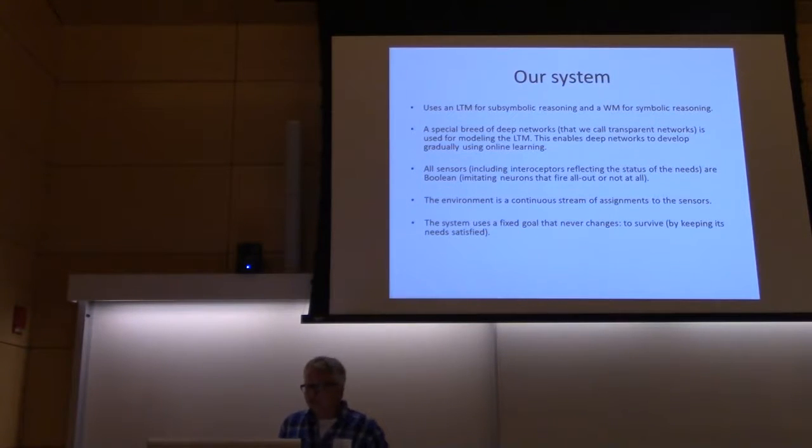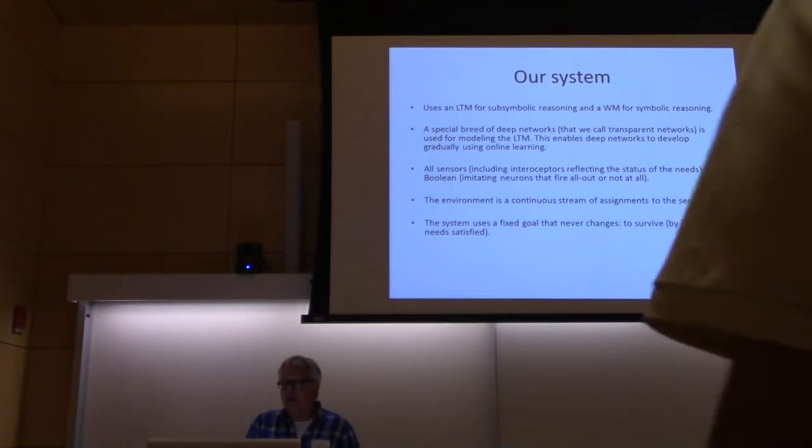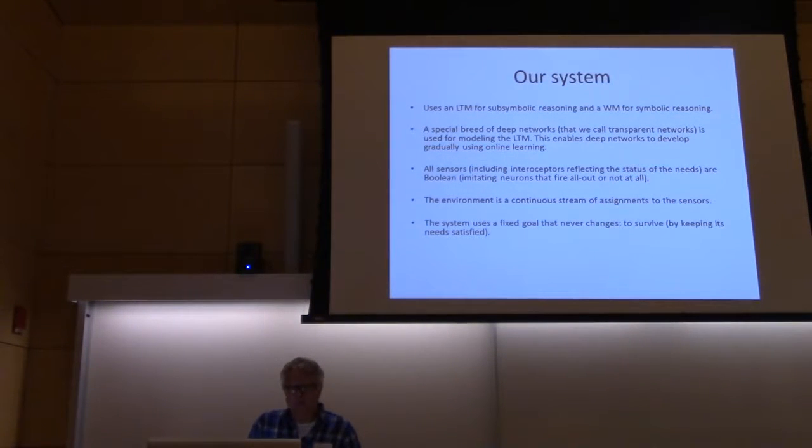Our system is inspired by that. This is just an outline of some of the main ideas that go into the system that we built. The system uses a long-term memory for sub-symbolic reasoning and a working memory for symbolic reasoning. We use a special kind of network, a home-made kind of network that we call transparent networks for modeling the long-term memory. This enables us to develop deep networks gradually using online learning, not batch learning as is most common for deep learning.